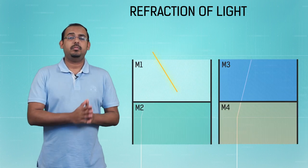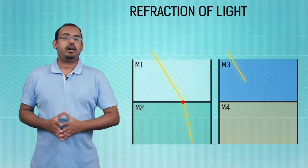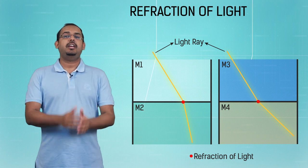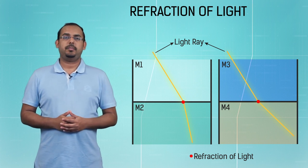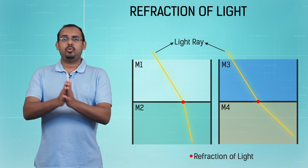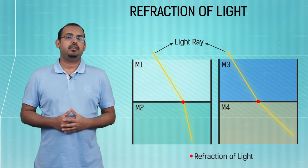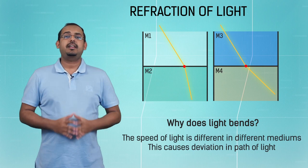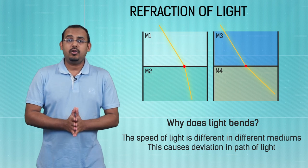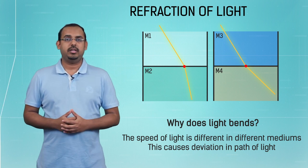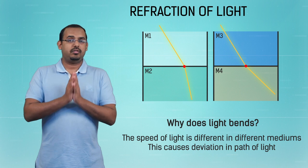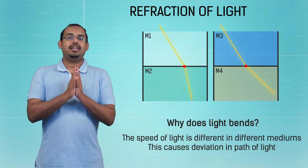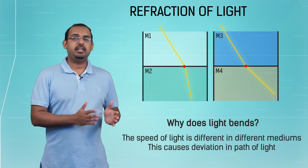When light moves from one medium to another medium, it bends out of its original path or it deviates from its original path, and this phenomena of deviation of light is what is called as the refraction of light. Now when light travels from one medium to another medium, why does it deviate from its path? Well, the speed of light is different in both these mediums. So whenever light travels from one medium to another, the speed of light changes, and due to this different speed of light in different mediums, light bends when it moves from one medium to another.